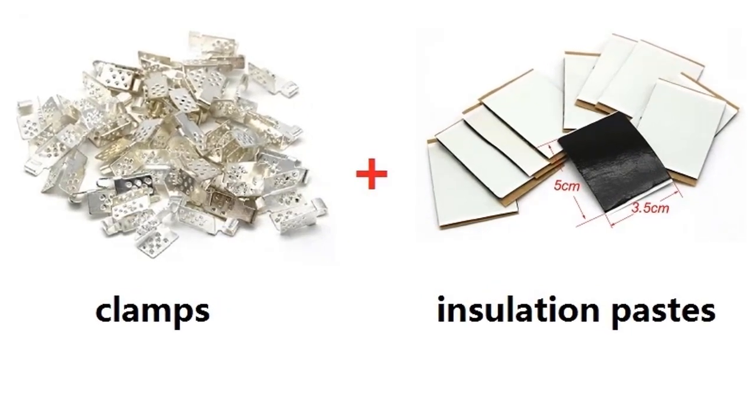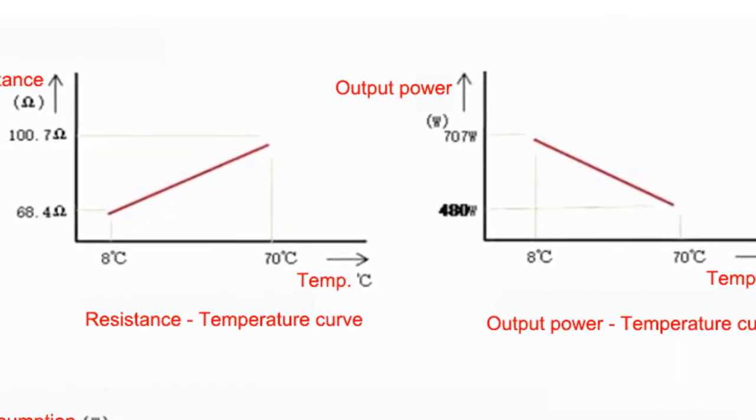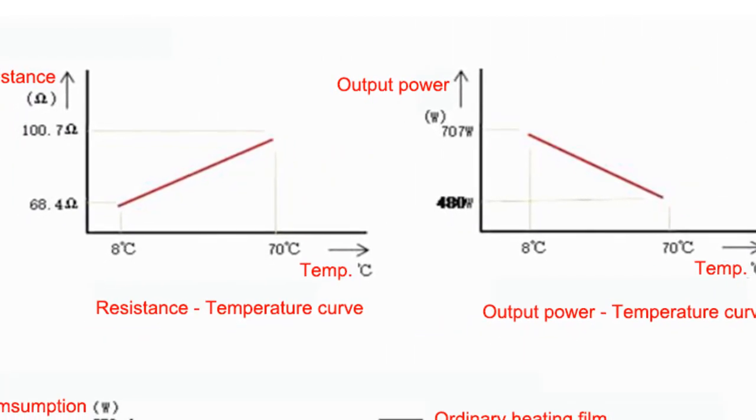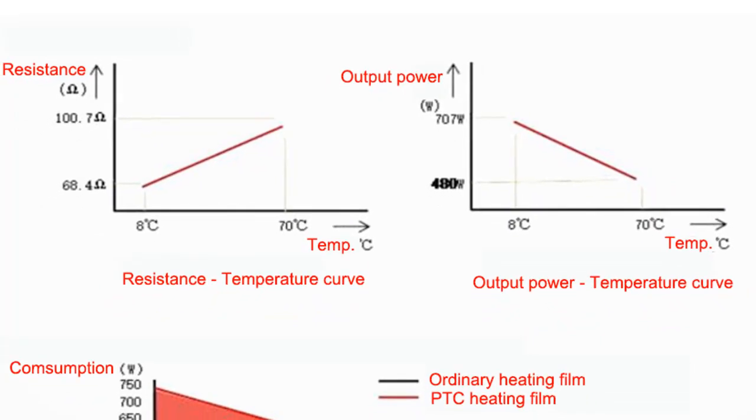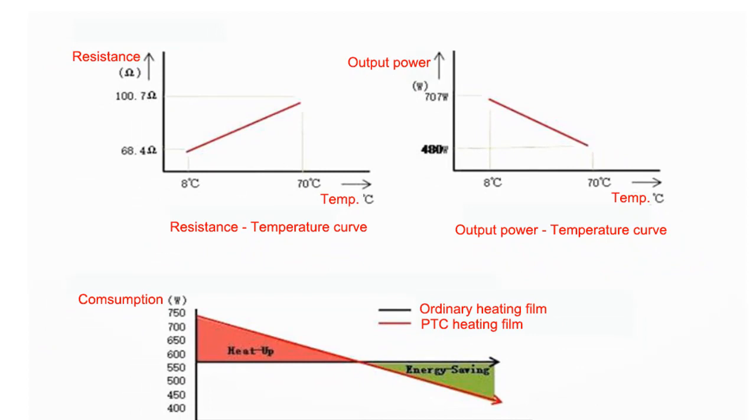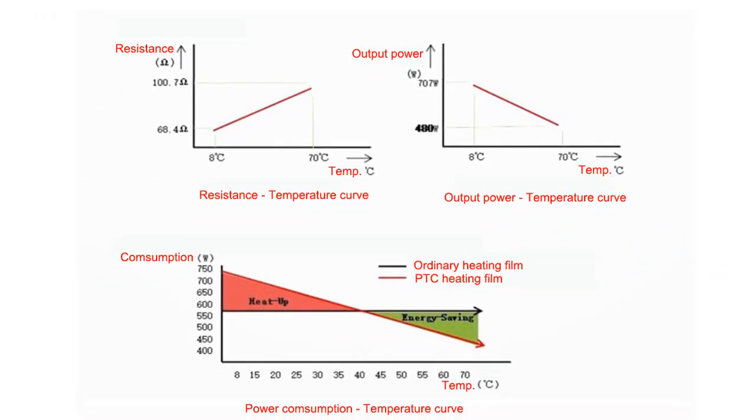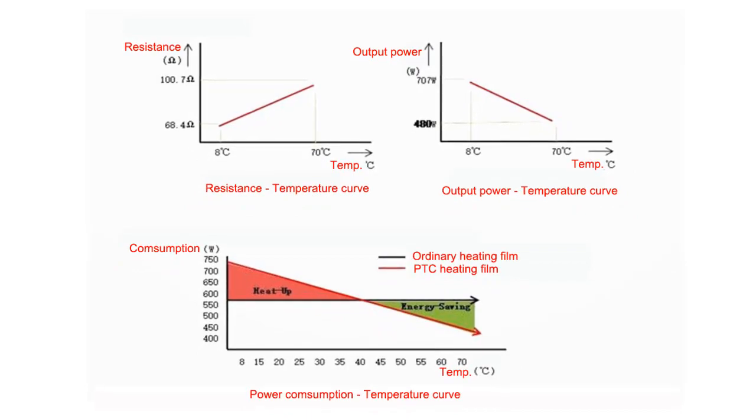Radiant floors are a type of heating system that uses PTC graphene film to heat the floor. The PTC graphene film is a positive temperature coefficient material, meaning that it becomes more resistive as the temperature increases. This makes it ideal for radiant flooring, as it prevents the floor from becoming too hot. PTC graphene film is also much thinner and more flexible than other radiant flooring materials, making it easier to install and less likely to damage your floor.